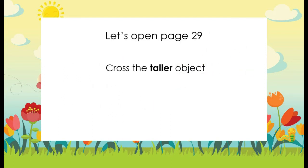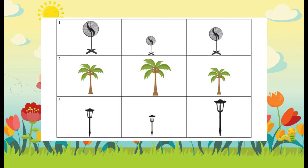We're going to cross out the taller object from three objects. Let's begin. The first one — you're going to see a stand fan. Which one is the taller? If you want to know how to answer this question, I want you to put your hand on the tallest fan and cover it.